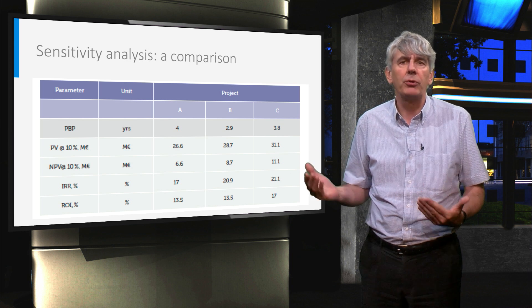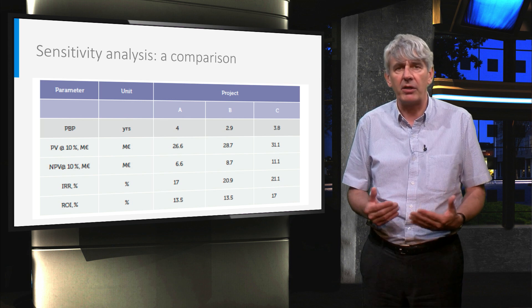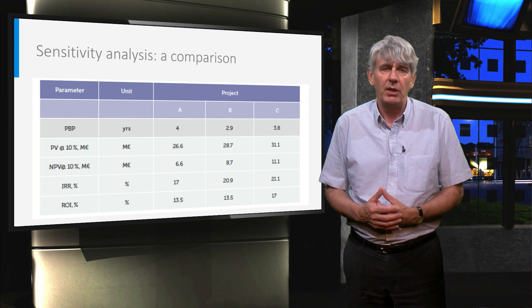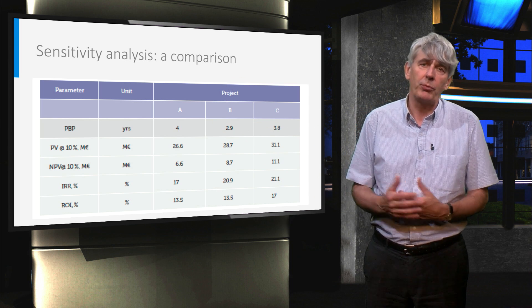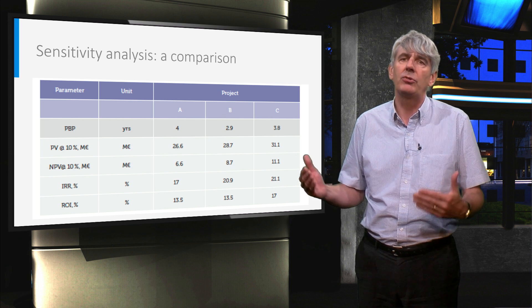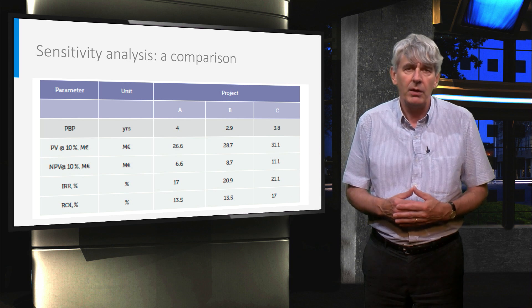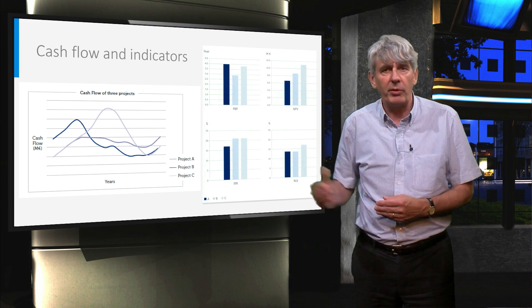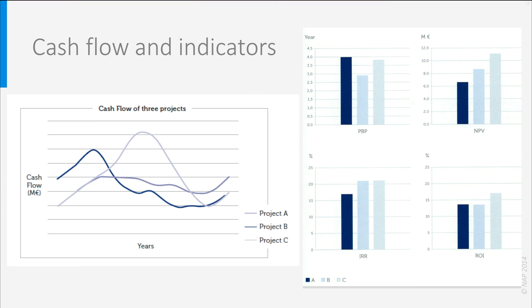PBP and ROI do not include time value of money. NPV and IRR provide information over the project period and the projected life of the asset. In contrast to PBP, they safeguard that profits in later years are duly reflected. The cash flows of the three projects are depicted in the graph on the left and the economic indicators are compared in the right half of the slide. Despite higher NPV, IRR, and ROI of project C, the short payback period of project B makes this project tempting for decision makers, especially those with a focus on the near future.